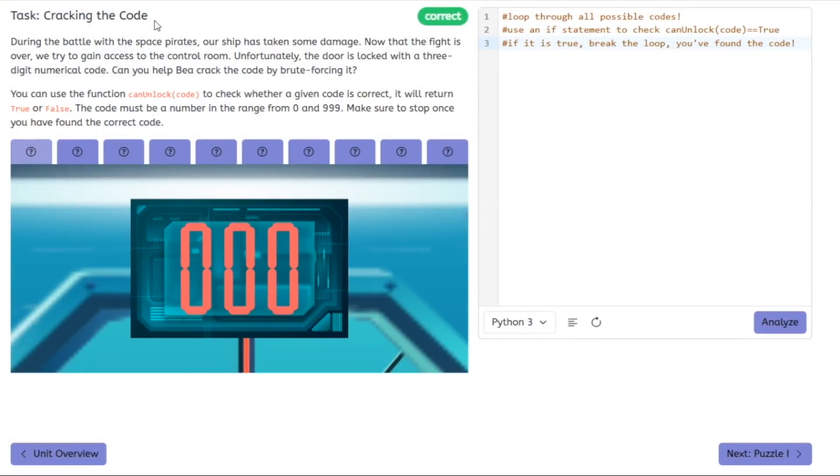We've just come out of a tough battle with those pesky space pirates, and now it's time to get things back in order. But there's a bit of a snag. The control room door is locked with a three-digit numerical code. I've got a feeling we can crack this code if we put our minds to it. Here's the plan. We're going to brute force our way through it until we find the right combination. It's going to take a bit of trial and error, but I know we can do it. Now, I've written a function called CanUnlockCode that will help us out. All we need to do is pass in a code, and it will tell us whether it's the correct one or not. Simple, right? But here's the catch. The code has to be a number between 0 and 999. So we've got quite a few possibilities to go through. But hey, I've never been one to back down from a challenge. We'll start with 000 and work our way up, checking each code along the way until we find the one that unlocks the door.